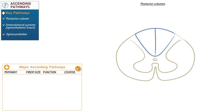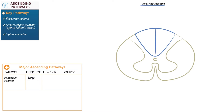We'll see how fiber size and function are related. The posterior column pathway comprises large sensory fibers that carry proprioceptive sensation — the sense of position — which includes vibration, two-point discrimination, and joint position information. Posterior column fibers ascend the spinal cord ipsilateral to their side of origin; they do not cross to the opposite side. A division occurs at thoracic level T6.